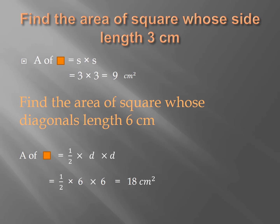Now, you have an example. Find the area of square whose side length is 3 cm. You are given the side length, so you use the rule for area of square by the side. Area of square equals side times side equals 3 times 3 equals 9 cm².